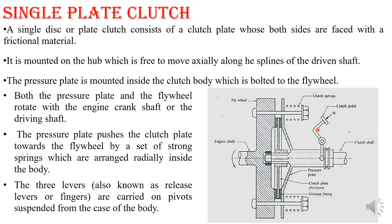When you press the clutch pedal it pushes back against the spring force, so the pressure plate pulls back against the spring force and there is no contact between your engine shaft and clutch shaft. The flywheel rotates freely and the pressure plate assembly rotates freely — there is no connection between the two, so power is not transmitted from the engine shaft to the clutch shaft. Hence we have achieved the disengaged condition. This is how your single plate clutch works.